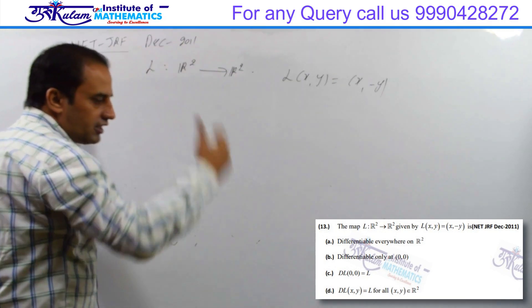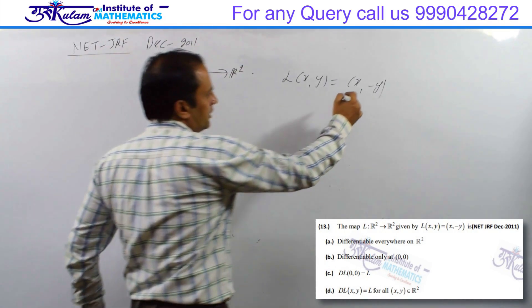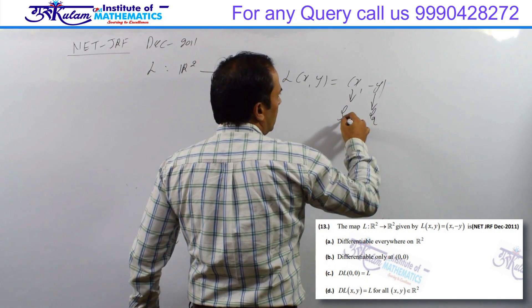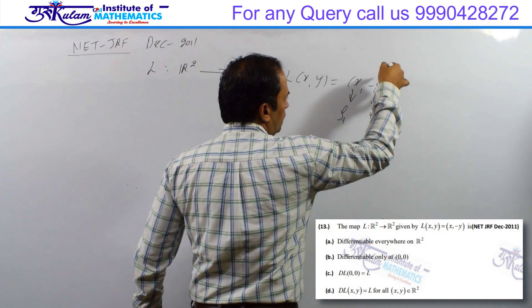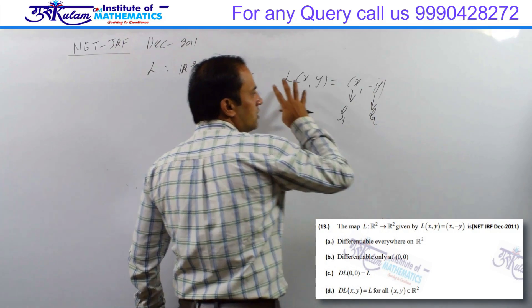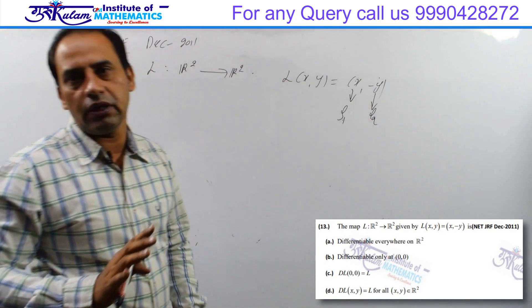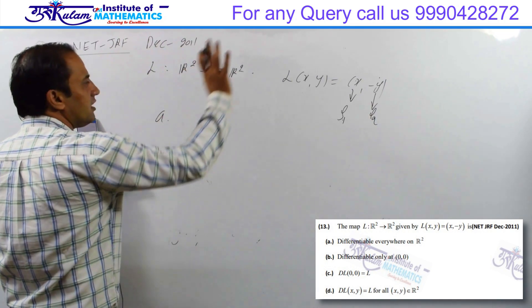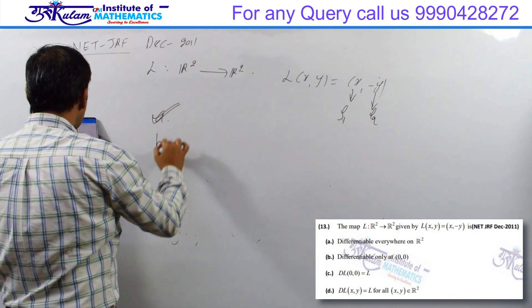Here F1 function and F2 function are both polynomial functions. Polynomial functions are differentiable. So the first option says it is differentiable everywhere, which is true.